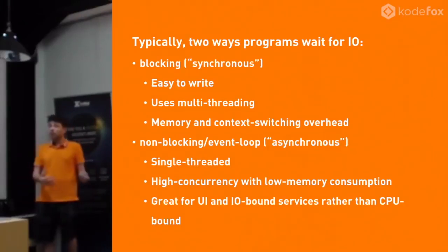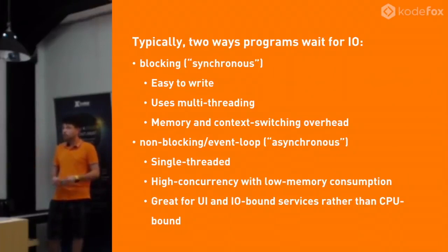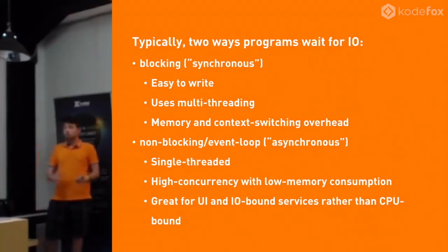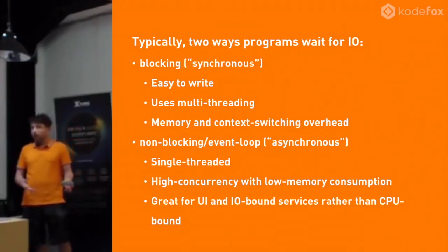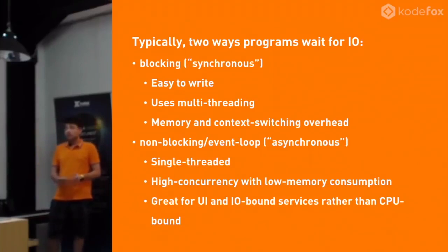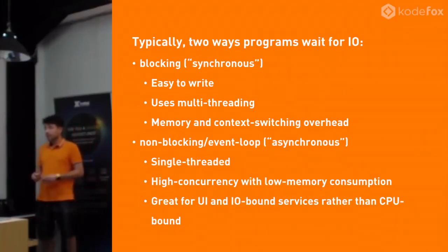Because if we stop one thread, we need another thread to be able to continue to serve user requests. It's easy to write because you write everything sequentially. However, there's a memory overhead to that because every thread requires memory. And there's context switching when the CPU switches between threads. The other pattern is the non-blocking or event loop style. That's single-threaded, so everything runs in one thread, which means we cannot block the thread. We do get high concurrency and low memory - that's the win.